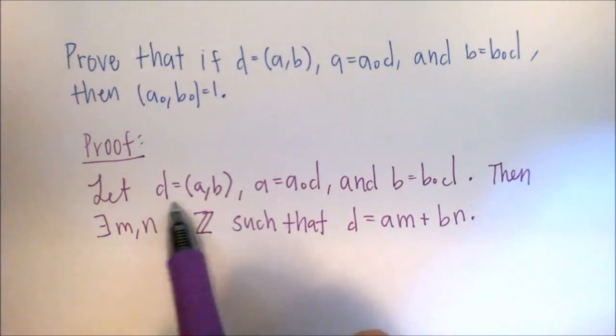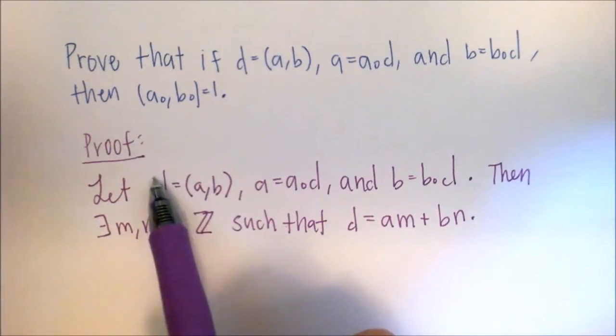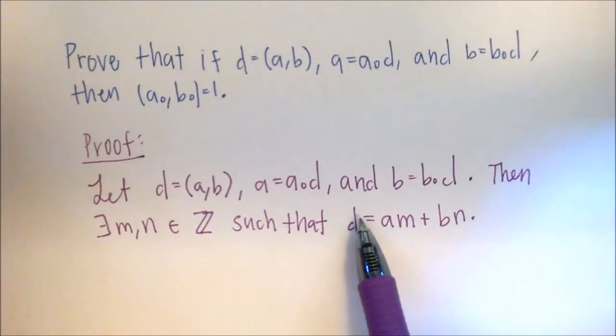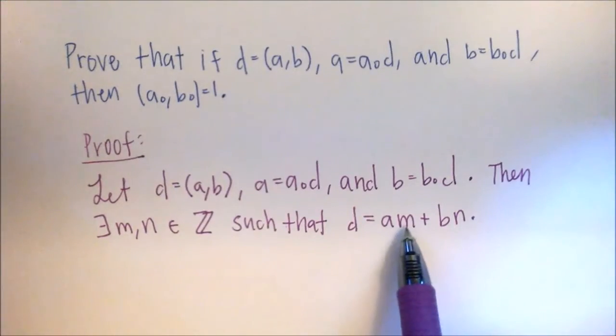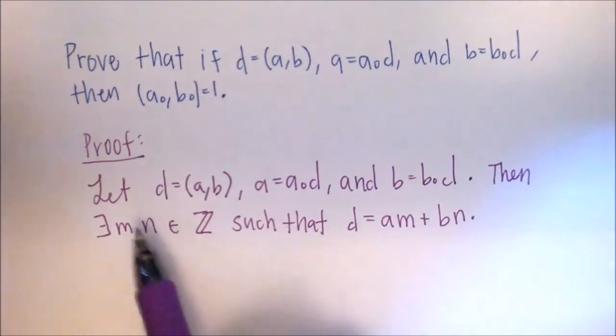So if you ever have a GCD statement here, you can rewrite it as a linear combination. And just make sure you say that these variables here are integers.